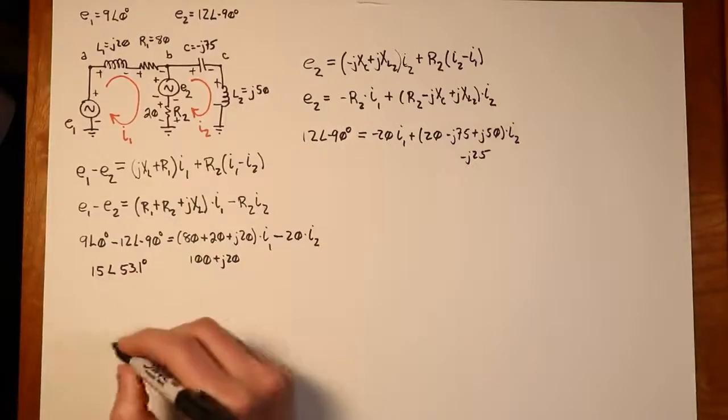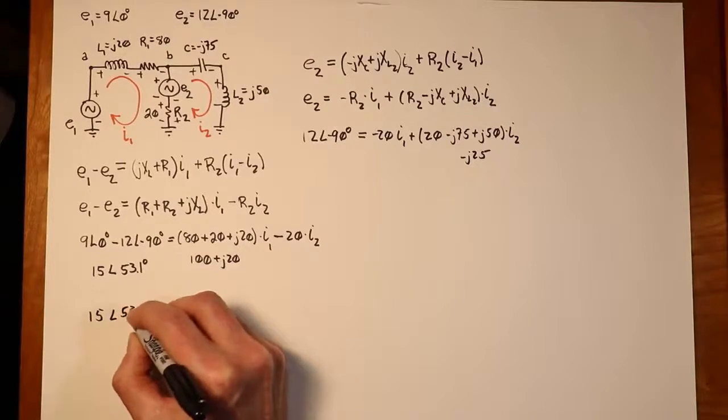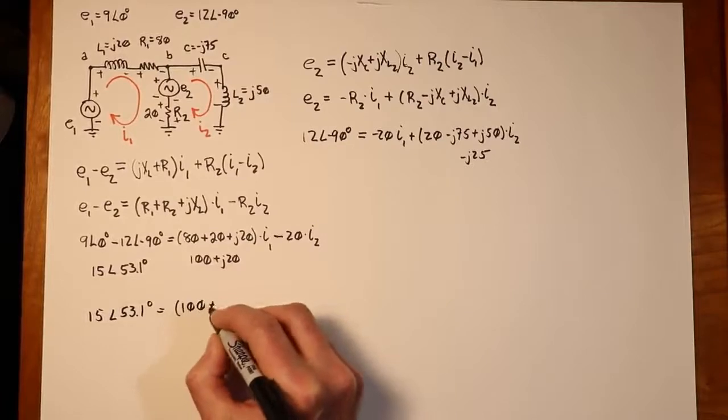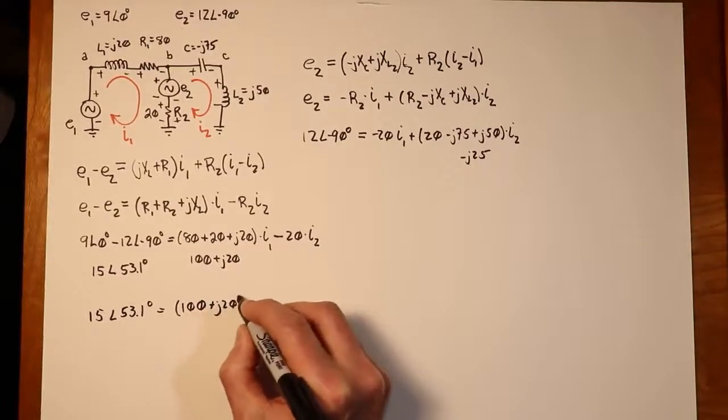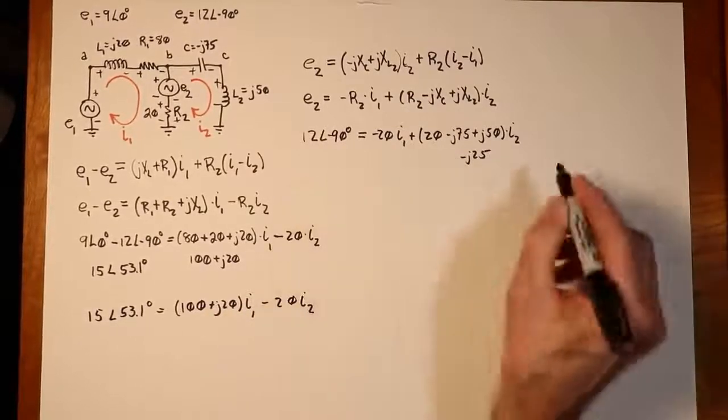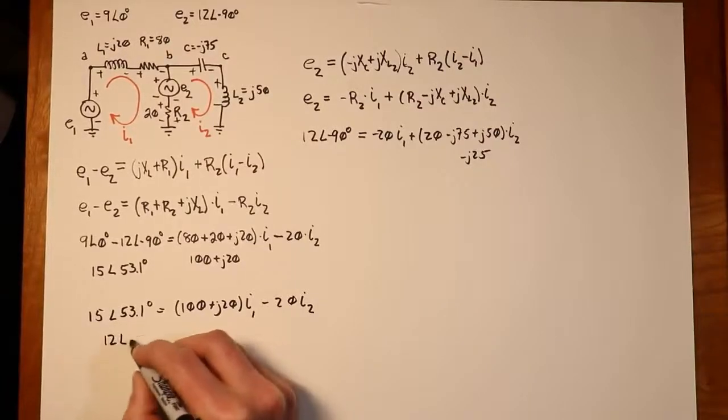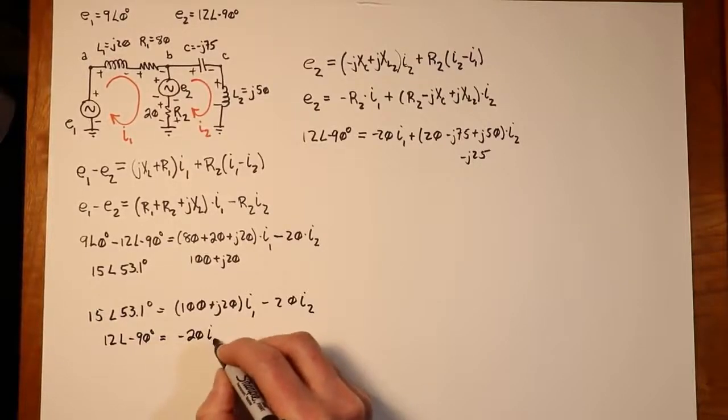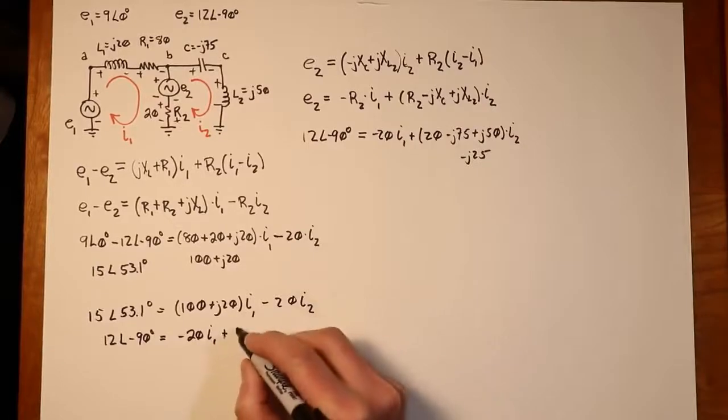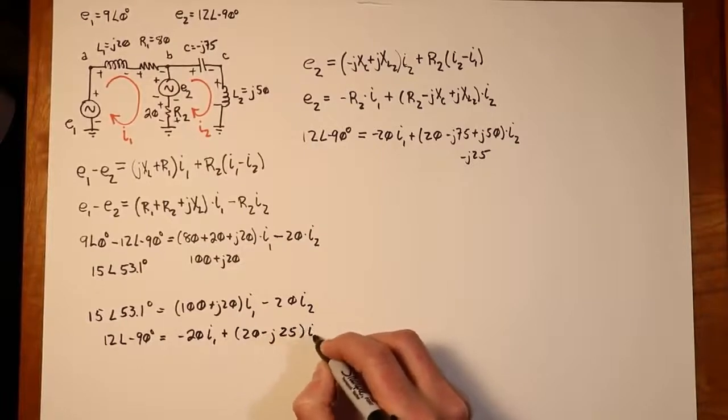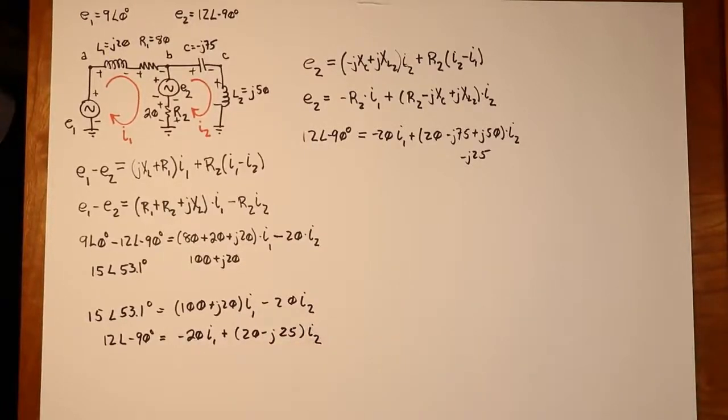Coming back over here, I'll just copy this back down. 15 at an angle of minus 53.1 equals the 100 plus J20 times I1 minus 20 I2. And then this equation, which is 12 at an angle of minus 90, minus 20 times I1 plus 20 minus J25 for the I2.